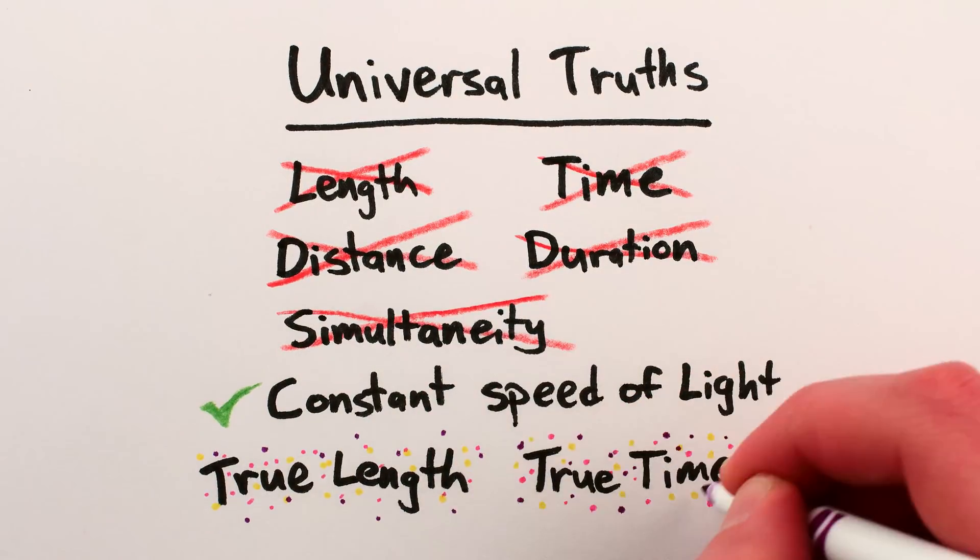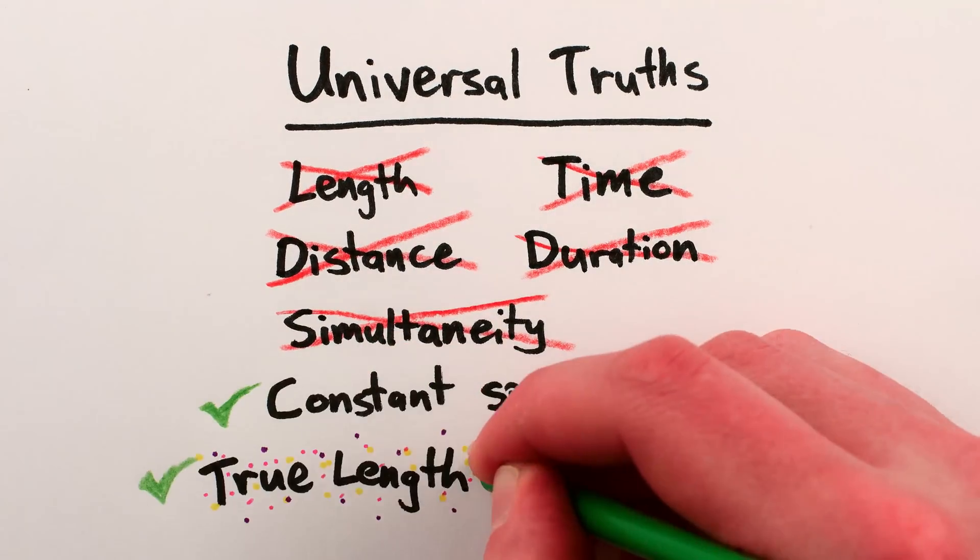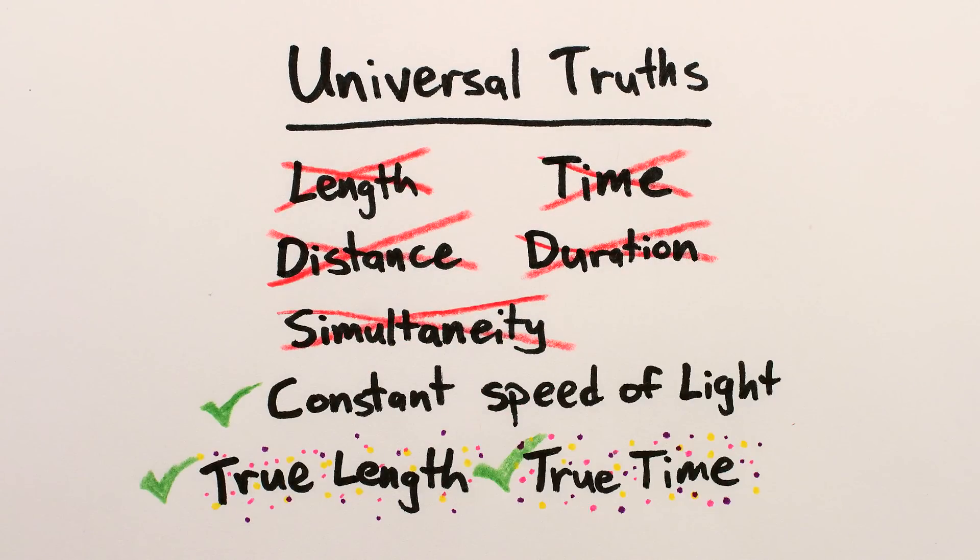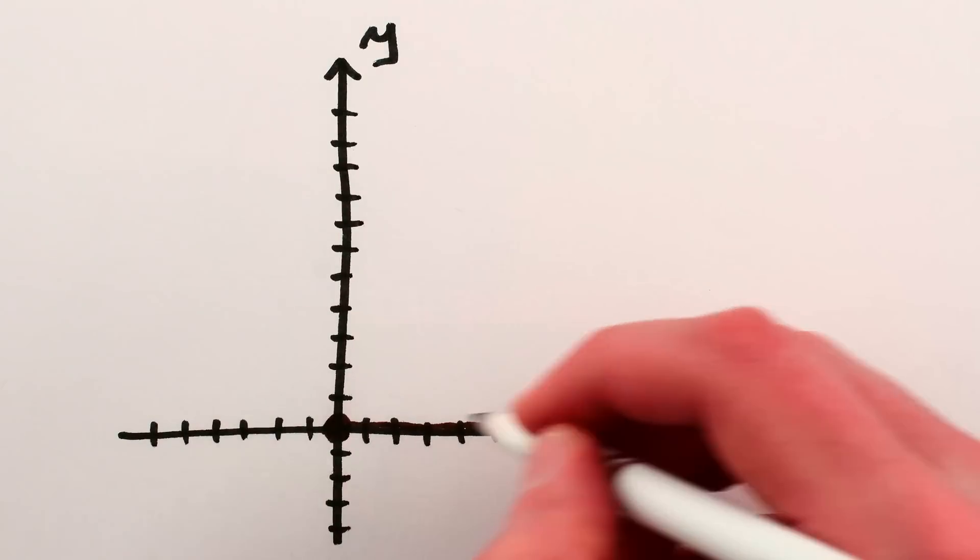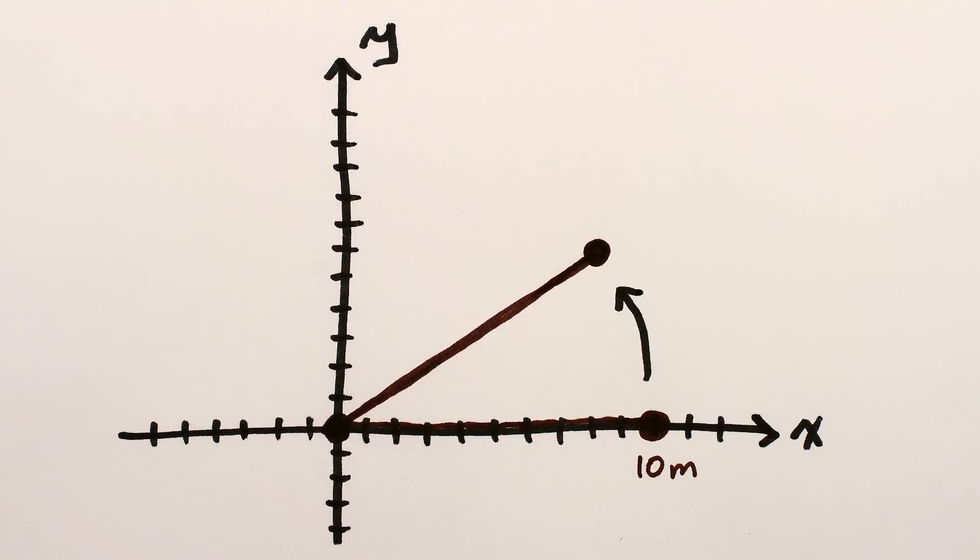Luckily, there is a version of length and time intervals that's the same from all moving perspectives, the way the speed of light is. You know how if you have a stick that's 10 meters long and you rotate it slightly and measure its length, it won't be 10 meters long in the x direction anymore? It'll be shorter?